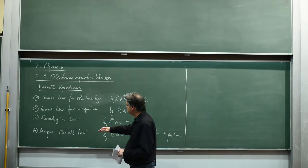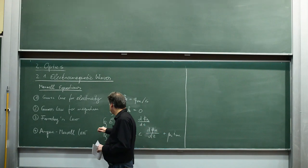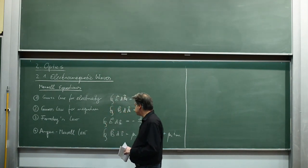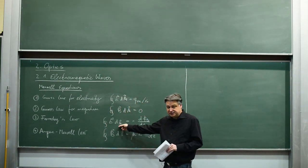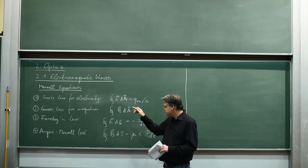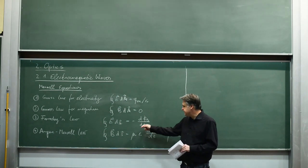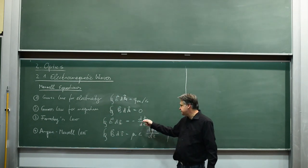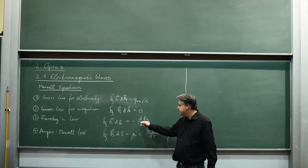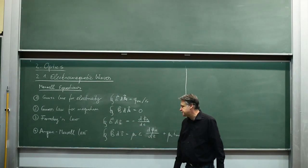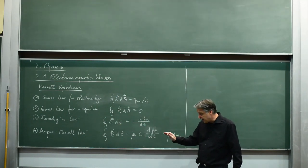The third law, Faraday's law: integral E dS, that's a line integral around the closed surface, is equal to minus d phi B over dT, the time derivative of the magnetic flux lines passing through that surface.